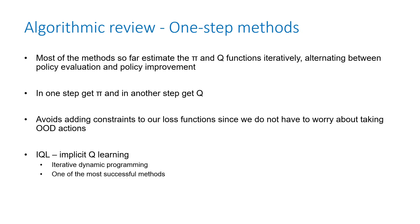Another algorithm type is one-step methods. Most methods so far estimate the Q function and policy iteratively, alternating between policy evaluation and policy improvement. In one-step methods you do both at the same time, so you don't need to add constraint losses to those functions. IQL — implicit Q-learning — uses this technique and is one of the most successful offline RL algorithms.